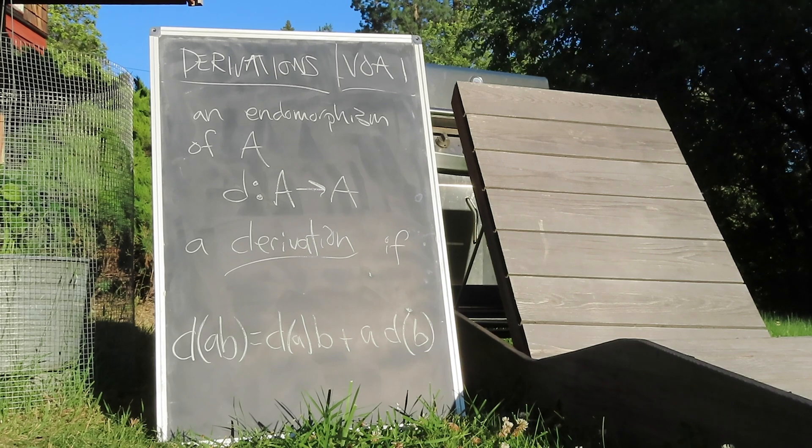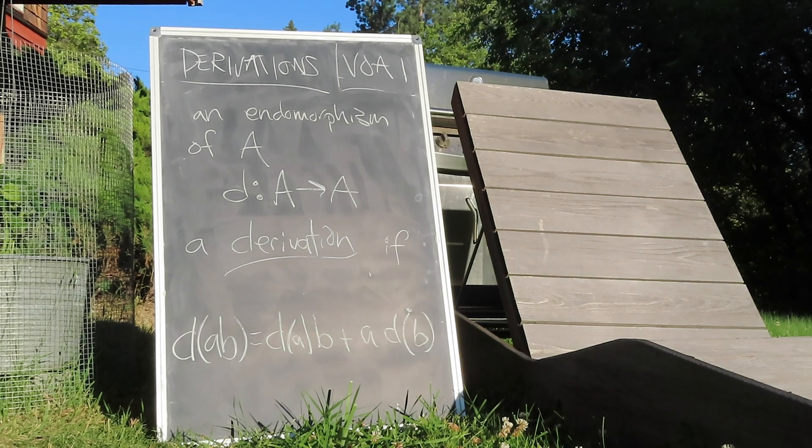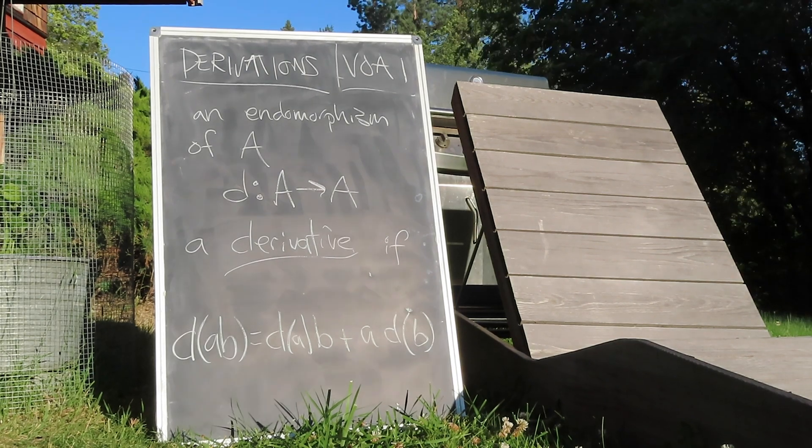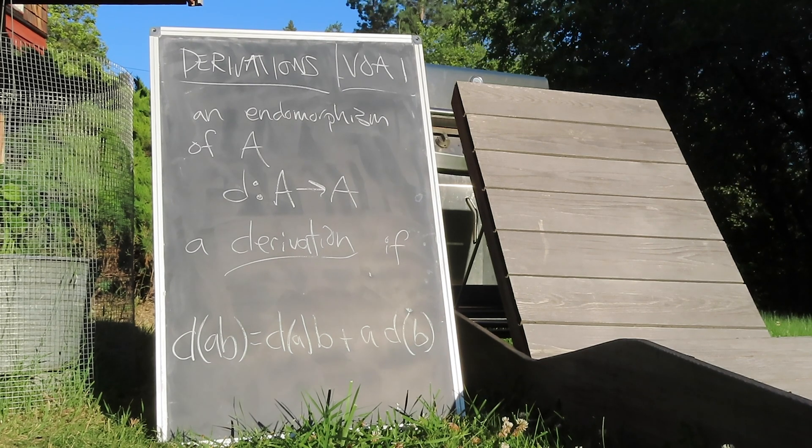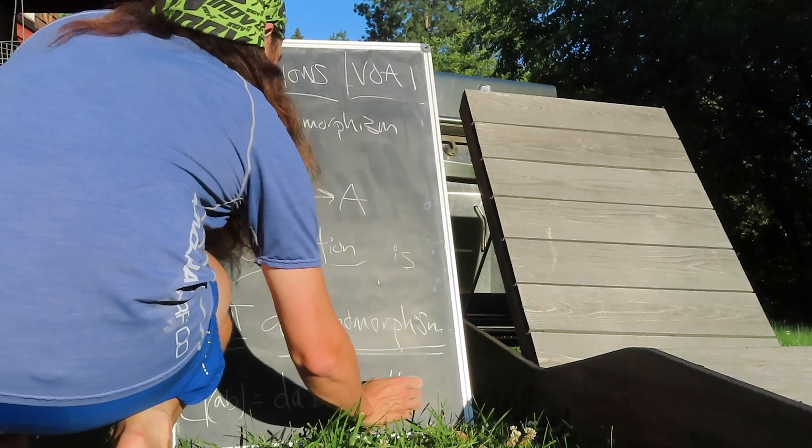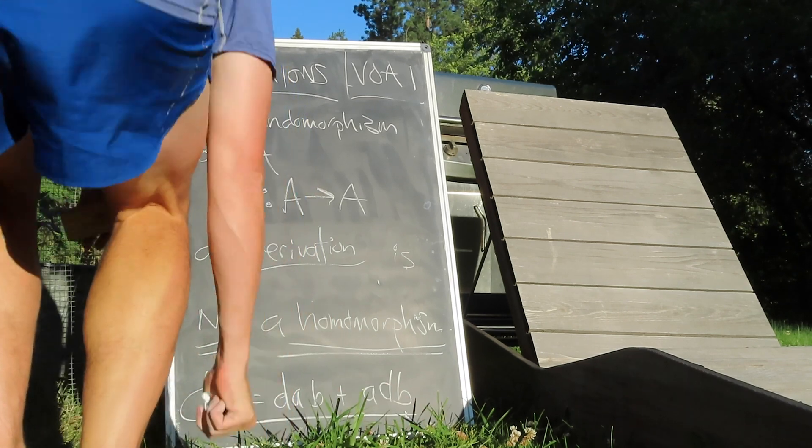One poetic way to think about a derivation is that it braids vector multiplication cross-vector addition in a symmetric way, acting on one factor at a time. Note that because of this, they are absolutely not a homomorphism.